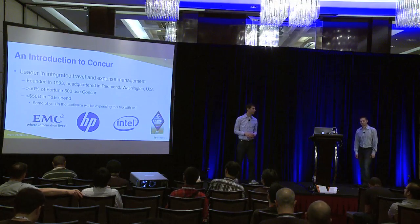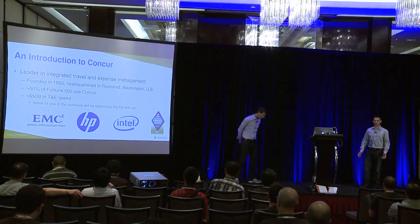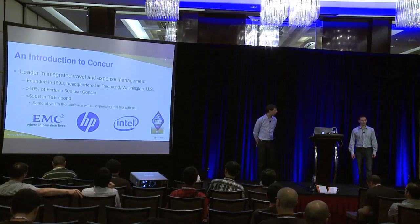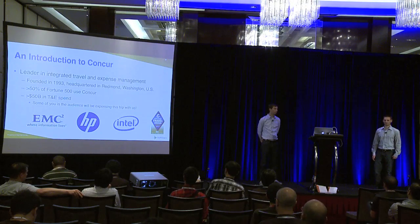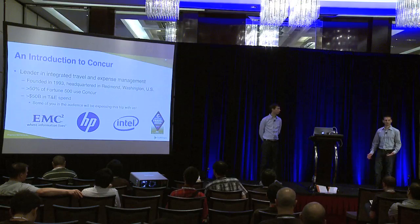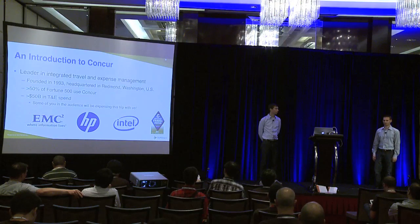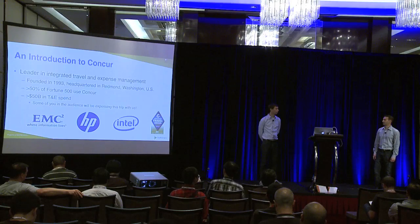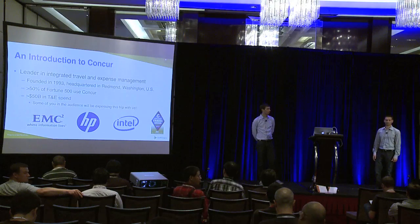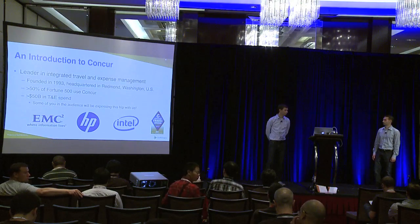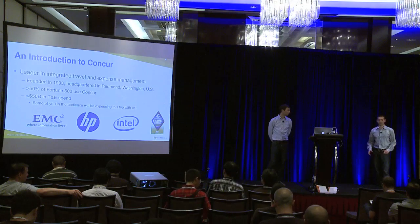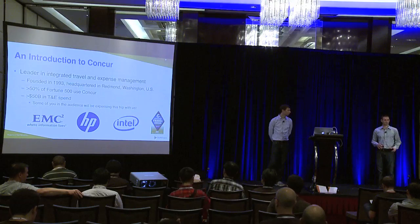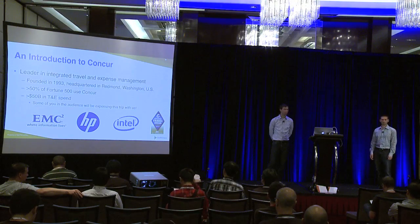So for anyone that doesn't know Concur, we automate business travel and expense claim reimbursement. We also have TripIt as our property. And we're growing very rapidly — there's quite a number of people in the Fortune 500 that are using our systems. But believe it or not, we've grown more in the last year in the small business segment than any other segment of our business.